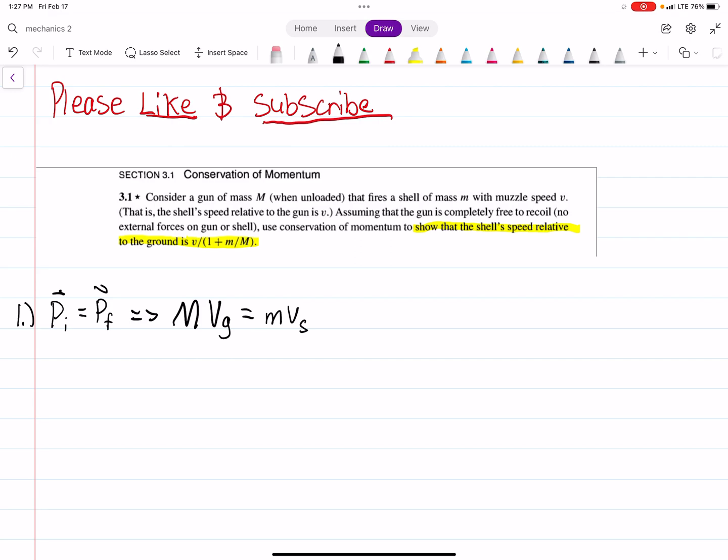Now what we can do is consider another equation here. This is because we're interested in the shell's relative speed, as highlighted in the question. In that case, we can say that V equals v of the shell plus v of the gun.